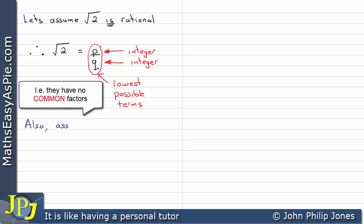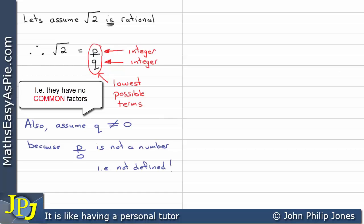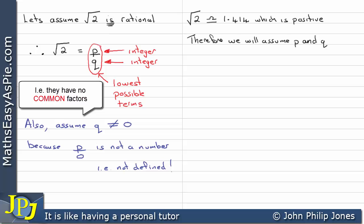We also assume that q is not equal to 0, because p divided by 0 is not defined. The square root of 2 is approximately 1.414, which is positive. Therefore we will assume p and q are both positive, ignoring the case of minus divided by minus giving a plus.